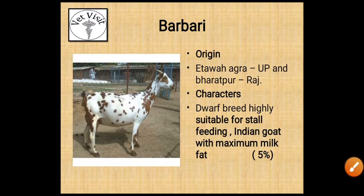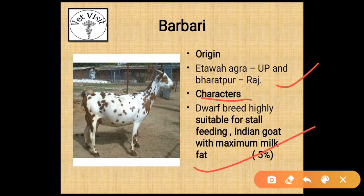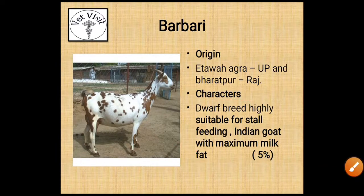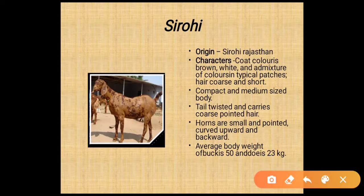The next breed is Barbari. Its origin is Etawah, Agra, UP and Bharatpur, Rajasthan. Its characters: dwarf breed, highly suitable for stall feeding. It is the Indian goat breed with maximum milk fat of 5% — mark this point as star. The answer to 'Indian goat breed with maximum milk fat' will be Barbari.